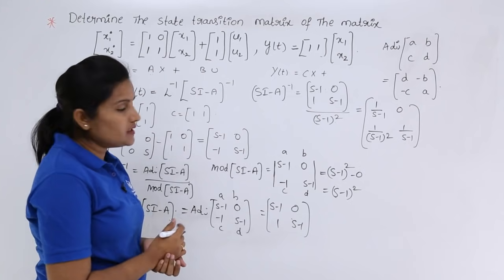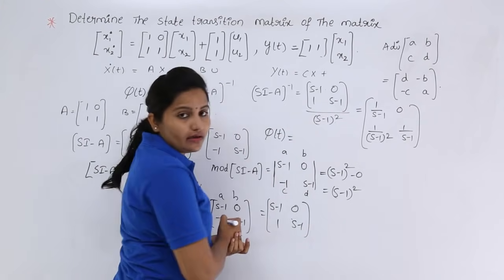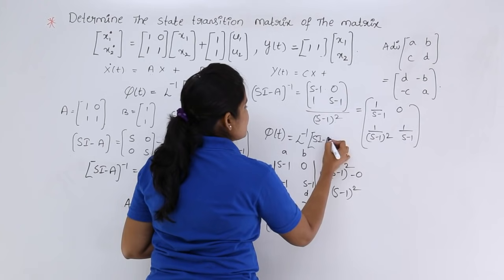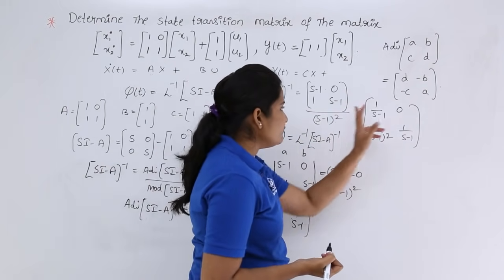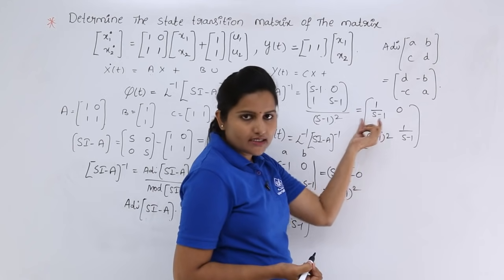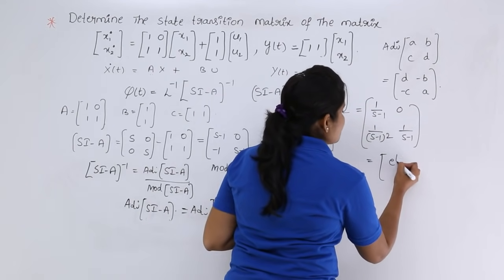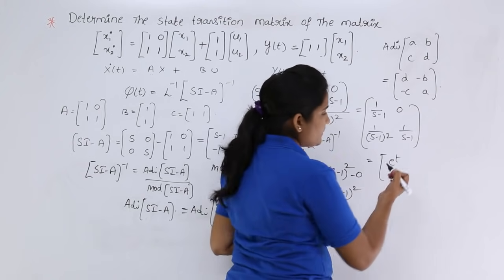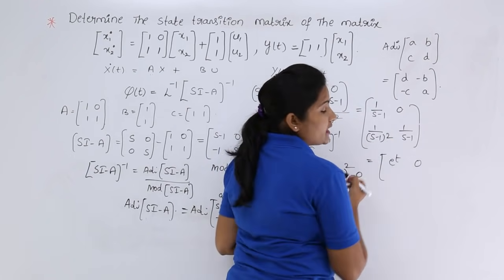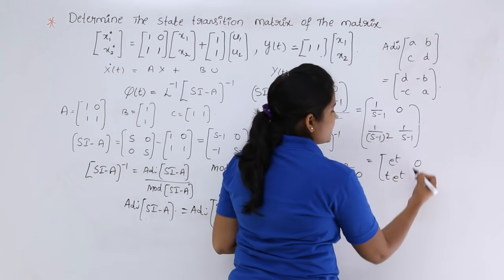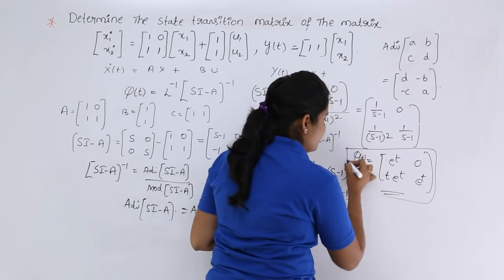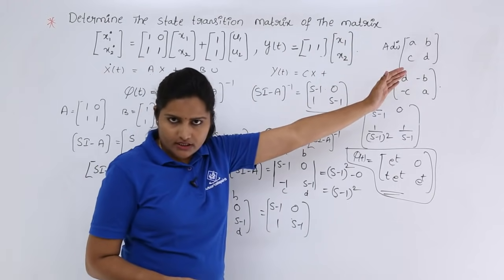Finally, we need to find φ(T), the state transition matrix, which is the inverse Laplace transform of (sI - A) inverse. The inverse Laplace transform of 1/(s-1) is e^t, of 0 is 0, of 1/(s-1)² is t·e^t, and of 1/(s-1) is again e^t. Therefore, φ(T) = [e^t, 0; t·e^t, e^t]. This is the state transition matrix for the given state model.